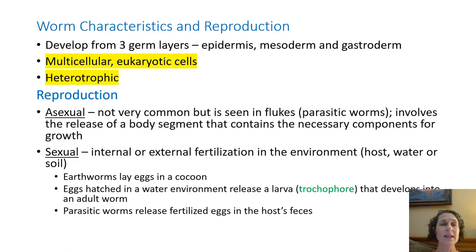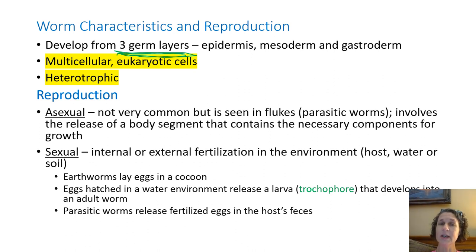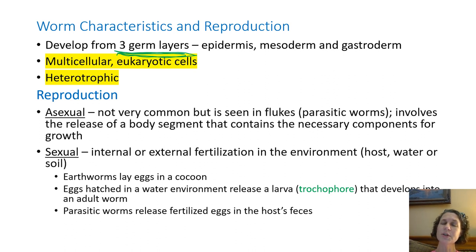Now for worm characteristics — general information. These guys have three germ layers, and this is kind of the big thing. They have an epidermis, which is their skin and outer protection. The mesoderm — meso means middle — is the middle layer. This is what forms muscles and gives support or harder substances within the body. Worms do have muscles and they move. And then the gastroderm, which we've already talked about, is the digestive and intestinal system.